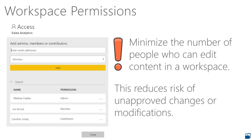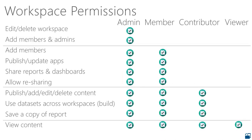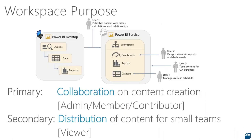With regard to permissions, minimize who can edit content in a workspace to avoid unapproved changes. There are four permission levels: admin, member, and contributor align with your collaboration roles, while viewer is newer and appropriate in certain circumstances. Going back to the collaboration versus distribution distinction, workspace roles help manage both scenarios.